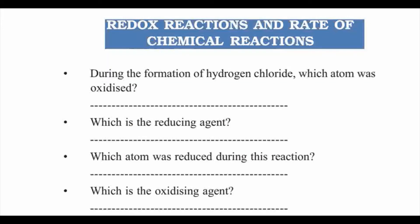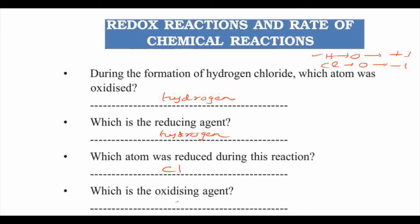During the formation of hydrogen chloride, which atom is oxidized? Hydrogen oxidation number increases from 0 to plus 1, so hydrogen is oxidized. Then which is the reducing agent? The answer is again hydrogen — hydrogen is the reducing agent. Which atom was reduced? Chlorine oxidation number decreases from 0 to minus 1, so chlorine is reduced. Then which is the oxidizing agent? The atom that is reduced is the oxidizing agent, so chlorine is the oxidizing agent.